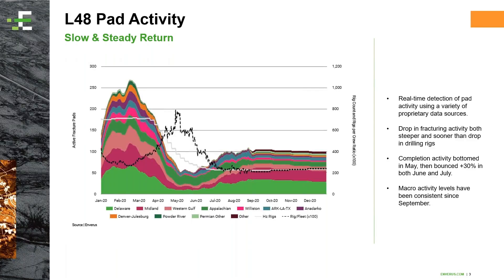When we hit that twin black swan event — both the pandemic and OPEC deciding to get into a pricing war in late February/early March — completion crews dropped much faster because there weren't the contractual obligations that rig contracts carry. You heard of a lot of companies going on a so-called 'frac holiday,' particularly in the Bakken and Permian, saying they'd maintain a rig but do no completions. The gas plays showed a lot more stability because gas prices weren't nearly as affected.